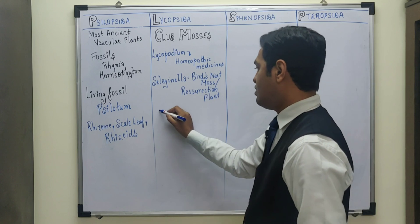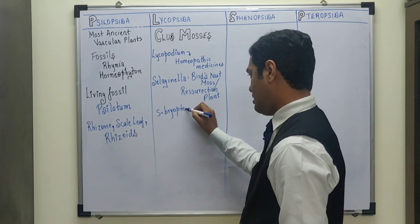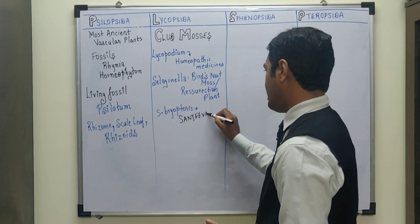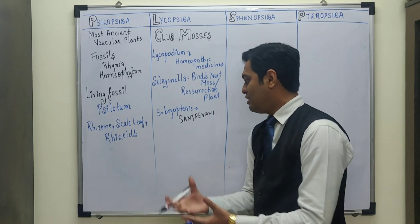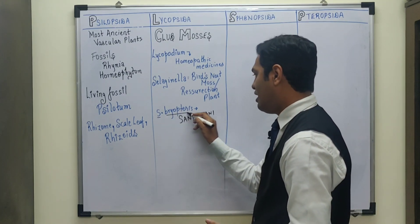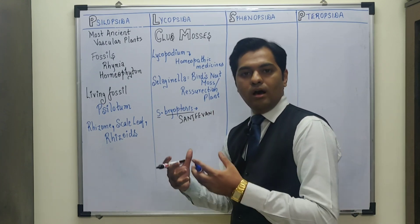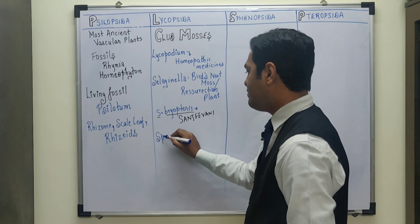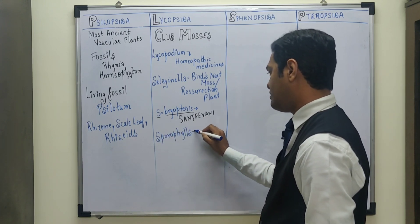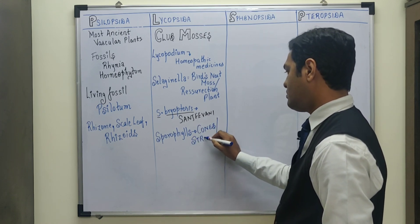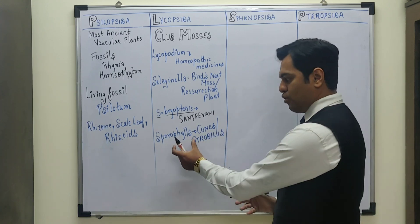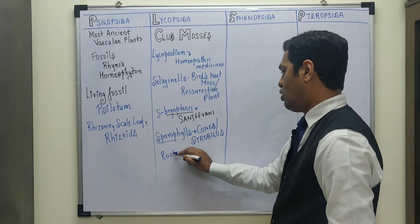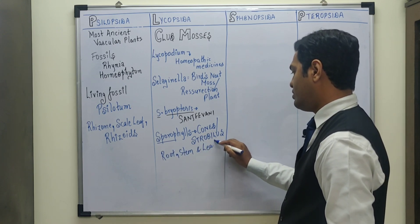One species, Selaginella bryopteris, is considered the Sanjeevni plant of Indian mythology — the herb said to have revived Lakshmana. It has valuable herbal uses as well. In Lycopsida, these plants have aggregates of leaves known as sporophylls, and these sporophylls form a cone or strobilus — a cluster of spore-producing leaves. They also have true root, stem, and leaf.